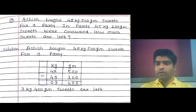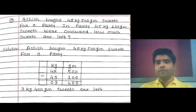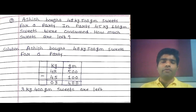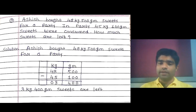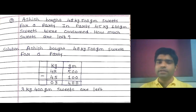First write down the given condition, then solve the calculation part. Read the question carefully to determine whether it involves addition or subtraction. In these examples we used subtraction. Many examples are based on kilogram and gram — you can find the answers using this method. Hope all students understood the concept of word problems based on kilogram and gram. The next topic will start in the next video. Have a nice day!